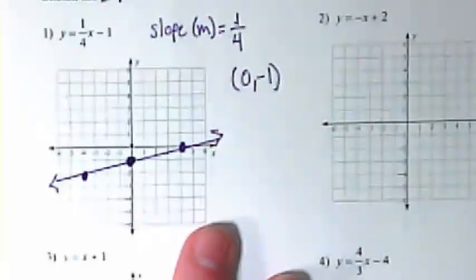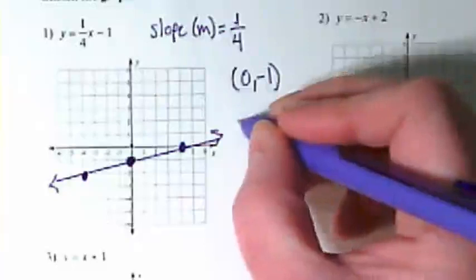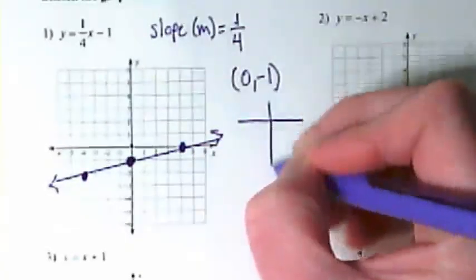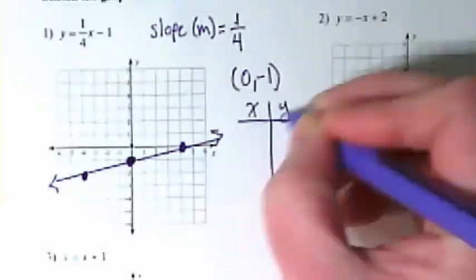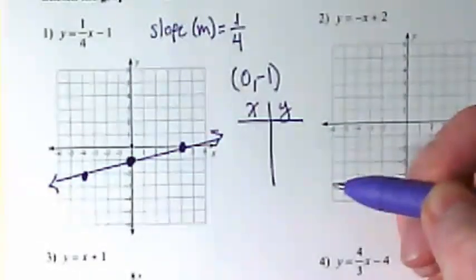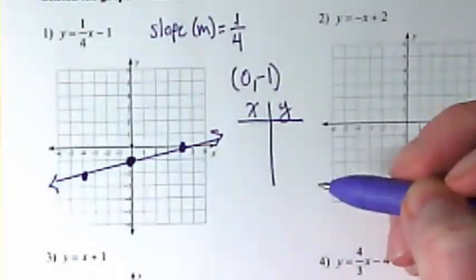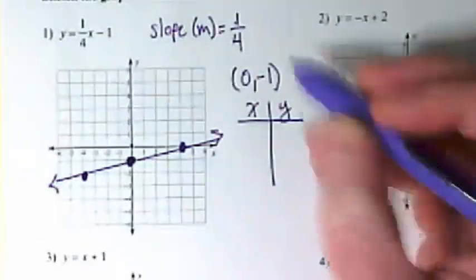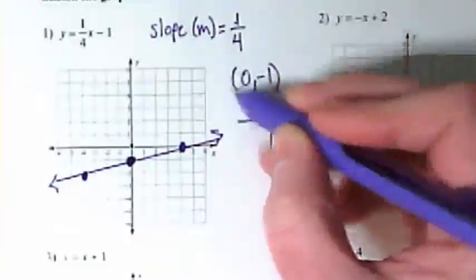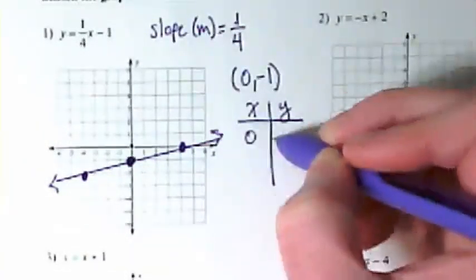So as we continue to work with our linear equations, we're also going to be producing a lot of tables. And in this table, I want us to do what we were practicing yesterday. And let's put in the table the points we found. We started off with our y-intercept of 0, negative 1.